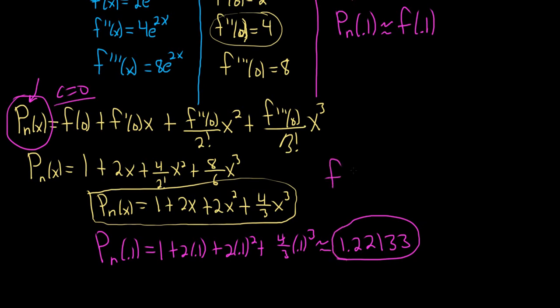Now if you actually work out f of 0.1 using a calculator, you would get e to the 2 times 0.1. So if you put this in your calculator, you'll notice, we'll see how good we did. So this is approximately equal to 1.221 for, and I'm going to go, how many decimals? I have 5 decimals here, so I'll go to 5 in my calculator. So this is the actual value, and this is the approximation.